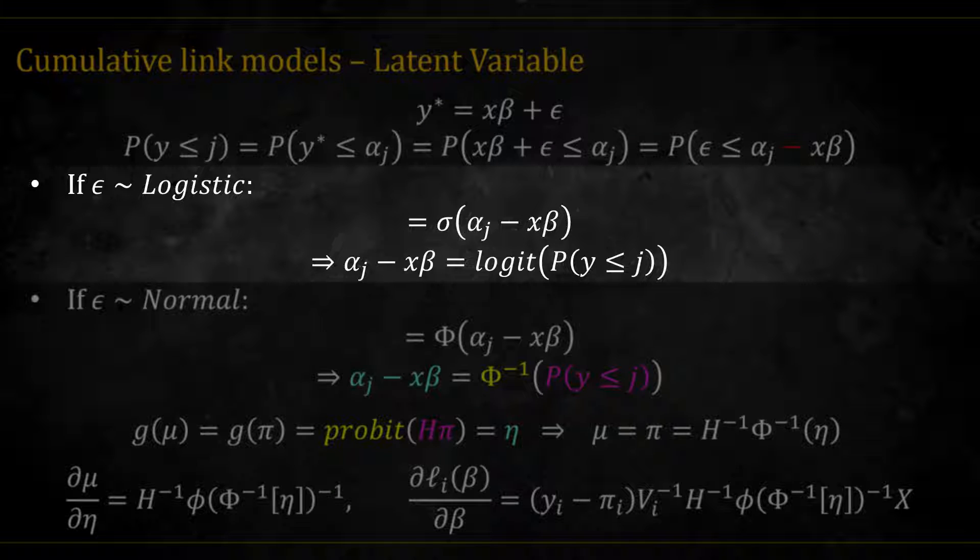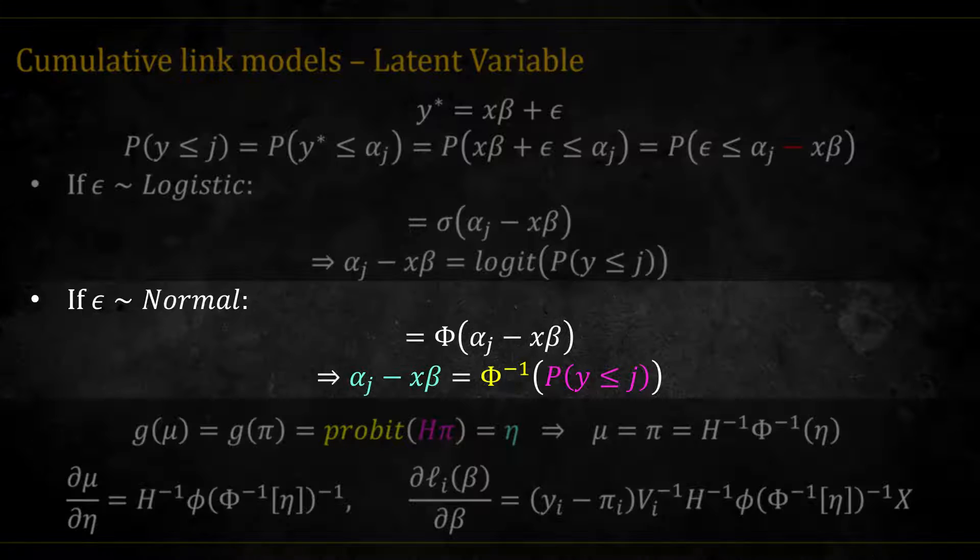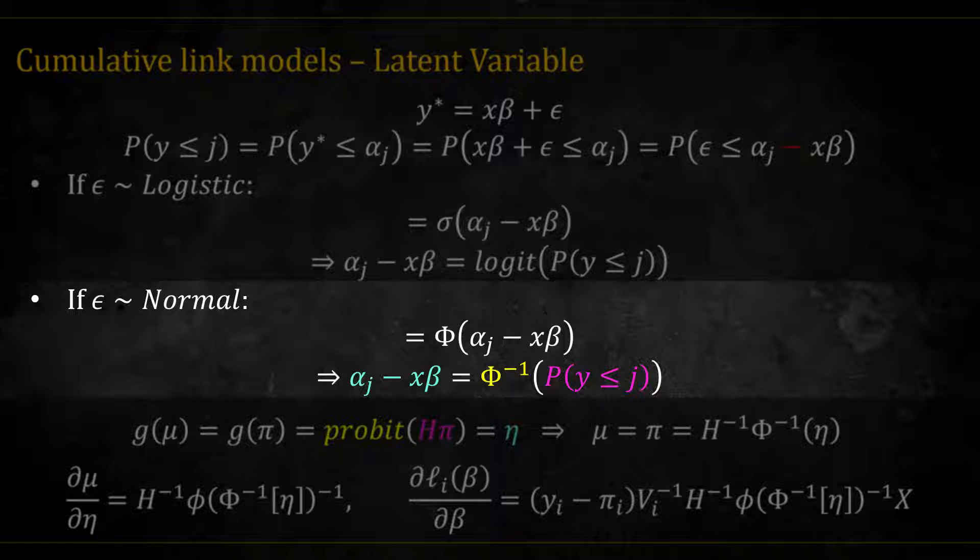In any case, if epsilon is standard logistic, the last term is equal to the sigmoid, which is the cdf of the logistic distribution. And then inverting the sigmoid, we get the link function. If epsilon is standard normal, this is equal to the cdf of the standard normal. And then we can invert that using the probit and get the link function.